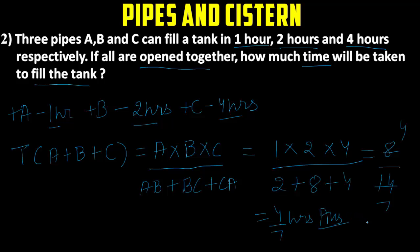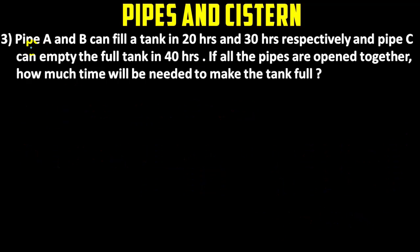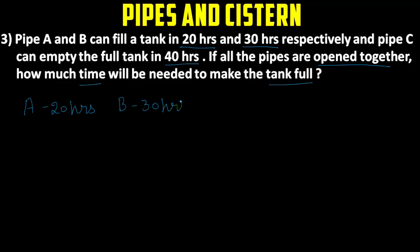Now the third question: pipe A and B can fill a tank in 20 hours and 30 hours respectively, and pipe C can empty the full tank in 40 hours. If all the pipes are opened together, find the time taken to fill the tank. A takes 20 hours and B takes 30 hours to fill, and C takes 40 hours to empty. A and B get positive signs; C gets a negative sign.